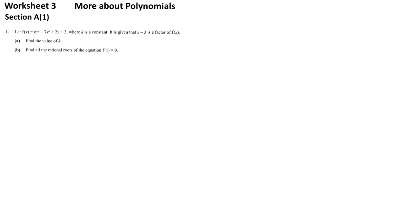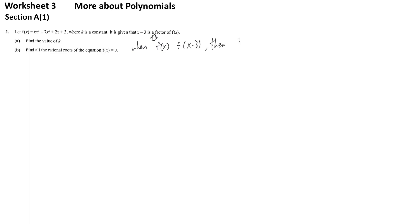This is about remainder theorem or factor theorem questions. They give you a function f(x) with k as an unknown, meaning we don't have the full picture of f(x). However, they say that x minus 3 is a factor, which implicitly tells us that when f(x) is divided by x minus 3, there is no remainder — the remainder equals zero. Even though this is called factor theorem, we are still relying on remainder theorem.